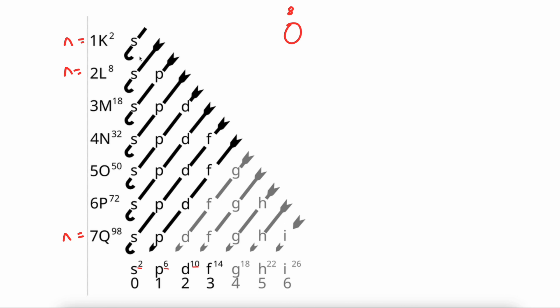We will start by going to our chart, and start here at the top. Remember, going diagonally. The first letter we cross is S. We can fit 2 electrons in the S sublevel, and this first S sublevel is in the first energy level. So we write 1S2.